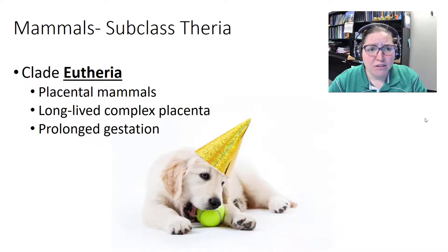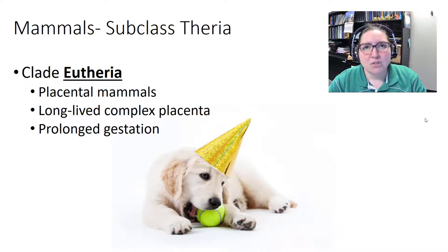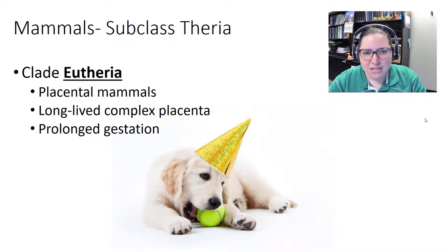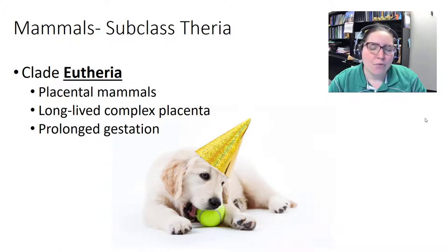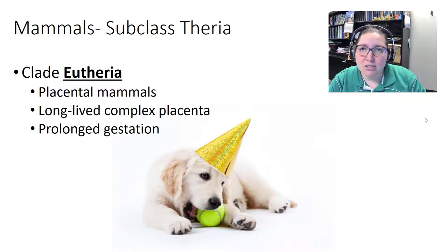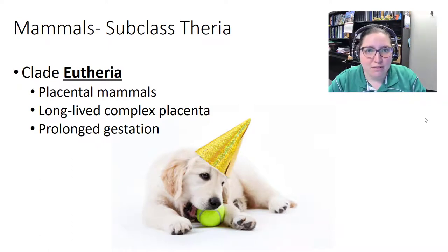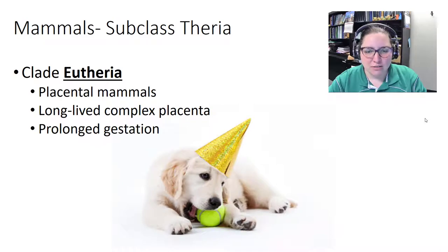Clade Eutheria, subclass Theria — the placental mammals. 'Eu' means true — these are the true beasts. They have a long-lived, complex placenta. Gestation period varies widely, from elephants to field mice, but all have a prolonged gestation compared to marsupials.